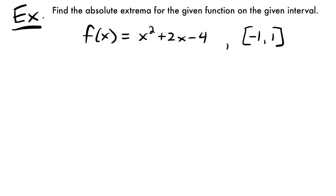Now if you're not familiar with the process of finding these absolute extrema, feel free to watch our lesson video on this topic where we explain this in depth, but I am still going to go over the steps here as we solve this problem. The first thing we're going to want to do is find our critical numbers, which are where our function has a slope of zero. So we're going to find the derivative of our function, set the derivative equal to zero, and solve for those values of x.